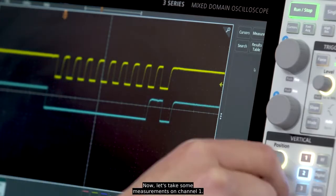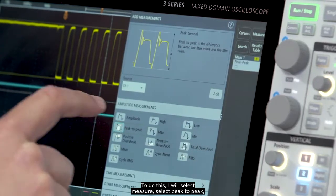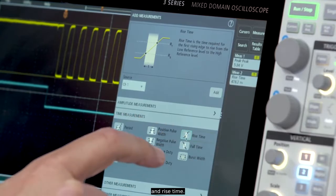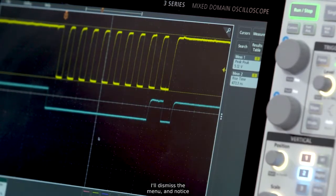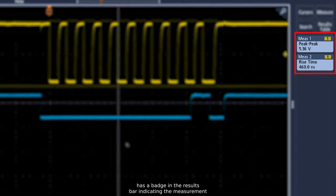Now let's take some measurements on channel 1. To do this, I will select measure, select peak to peak, and rise time. I'll dismiss the menu and notice that each measurement I selected now has a badge in the results bar indicating the measurement results.